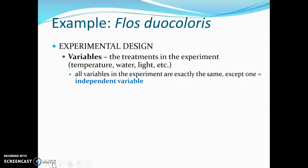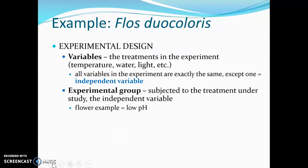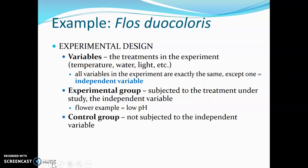Then we start looking at our experimental design. We want to think about our variables. In this case of the plant, ones that are going to be very important are temperature, water, and light. We want to make sure that all of those variables are exactly the same for all of our plants, except for one variable — the independent variable, the thing that we're actually going to be testing. So in this case it would be the low pH. The plants that we subject to that low pH are going to be the experimental group — they are the ones being treated with our independent variable. We're also going to have a control group that's not subject to that independent variable, which in this case would be grown at a high pH.